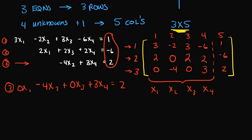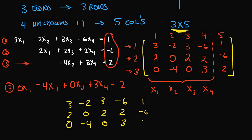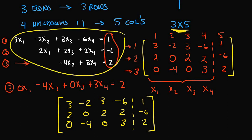Let me rewrite the augmented matrix for clarity. It is: row one — 3, negative 2, 3, negative 6, 1; row two — 2, 0, 2, 2, negative 6; row three — 0, negative 4, 0, 3, 2. That is our augmented matrix for this system of linear equations.